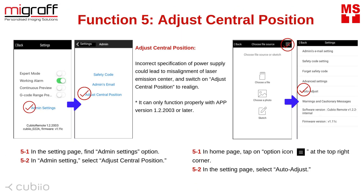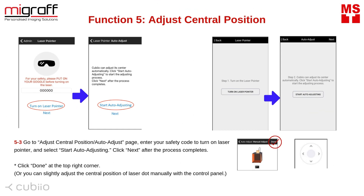Function number 5: Adjust central position. Incorrect specification of power supply could lead to misalignment of the laser emission sensor. Switch on adjust central position to realign. It can only function properly with app version 1.2.2003 or later. In the setting page, find admin settings options. In admin setting, select adjust central position and go to the auto adjust page. Enter your safety code to turn on the laser pointer and select start auto adjusting. Click next after the process completes, then click done at the top right corner.